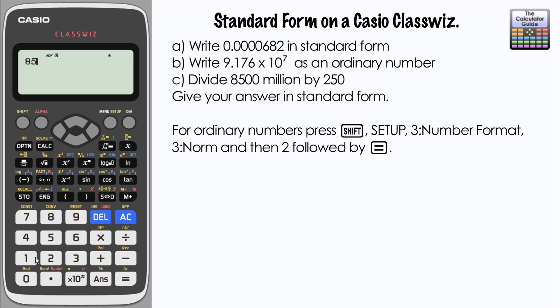So let's input that into the calculator: 8500. Now you can put times 10 to the 6 if you want here if you're comfortable with that being a million. I'm just going to go for six zeros. Make sure I've got enough zeros there. And then divided by 250, equals.